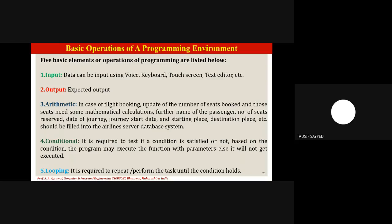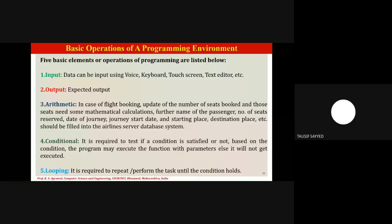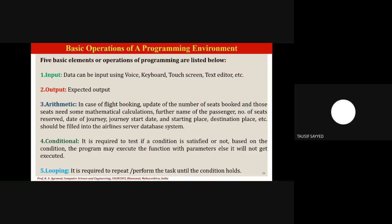The third basic operation is arithmetic — that is, computation or calculation in a piece of code. Arithmetic instructions involve basic mathematical operations such as addition, subtraction, multiplication, division, modulus, and remainder. The main idea is that you must know your objective, and based on that objective you will use arithmetic, conditional, and looping statements in your coding.